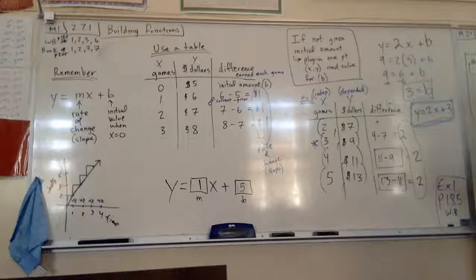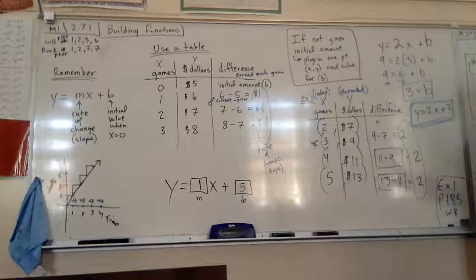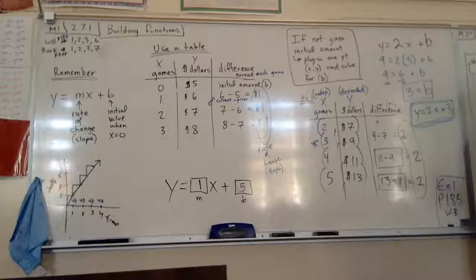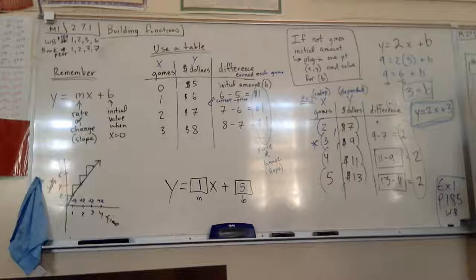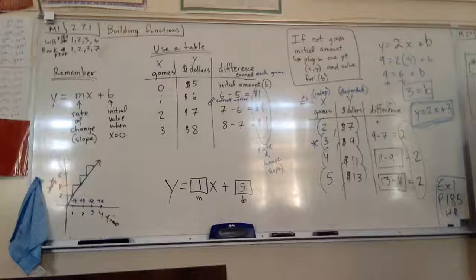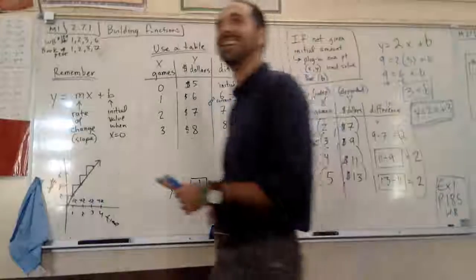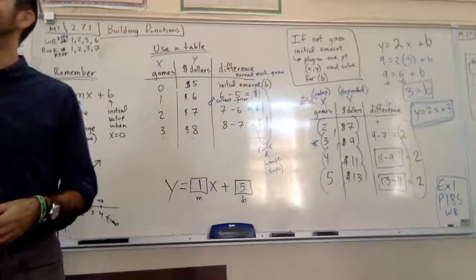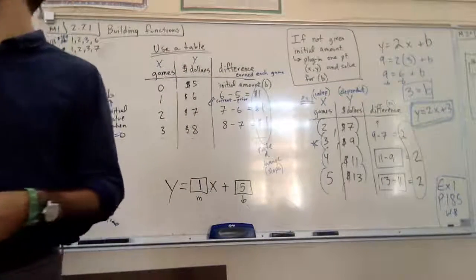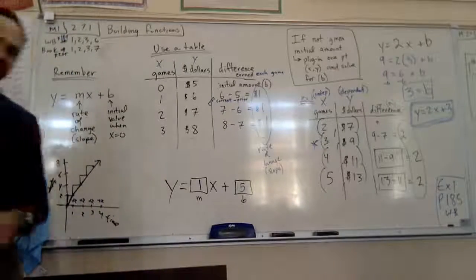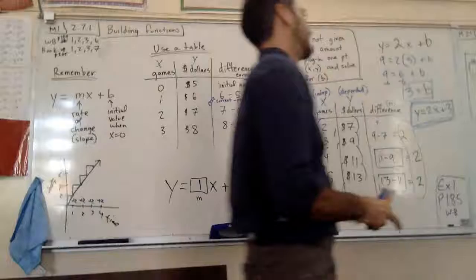Let's plug in nine for y and three for x. B equals three. So, what we just concluded was, our final equation up here is going to be y equals 2x plus 3.